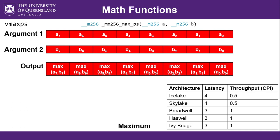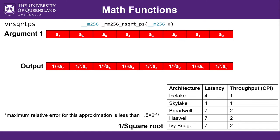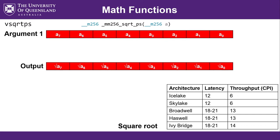Now let's look at math functions. The max function takes two input vectors and outputs the largest element out of A or B for each element — a pretty inexpensive operation, same as addition or subtraction. The square root function is a relatively expensive operation, similar to division, a bit worse. However, there's also a fast math approximation alternative: a reciprocal square root function that's not full IEEE 754 compliant, but the error is small, and it'll save you about a factor of 3 in latency and about 6 in throughput.